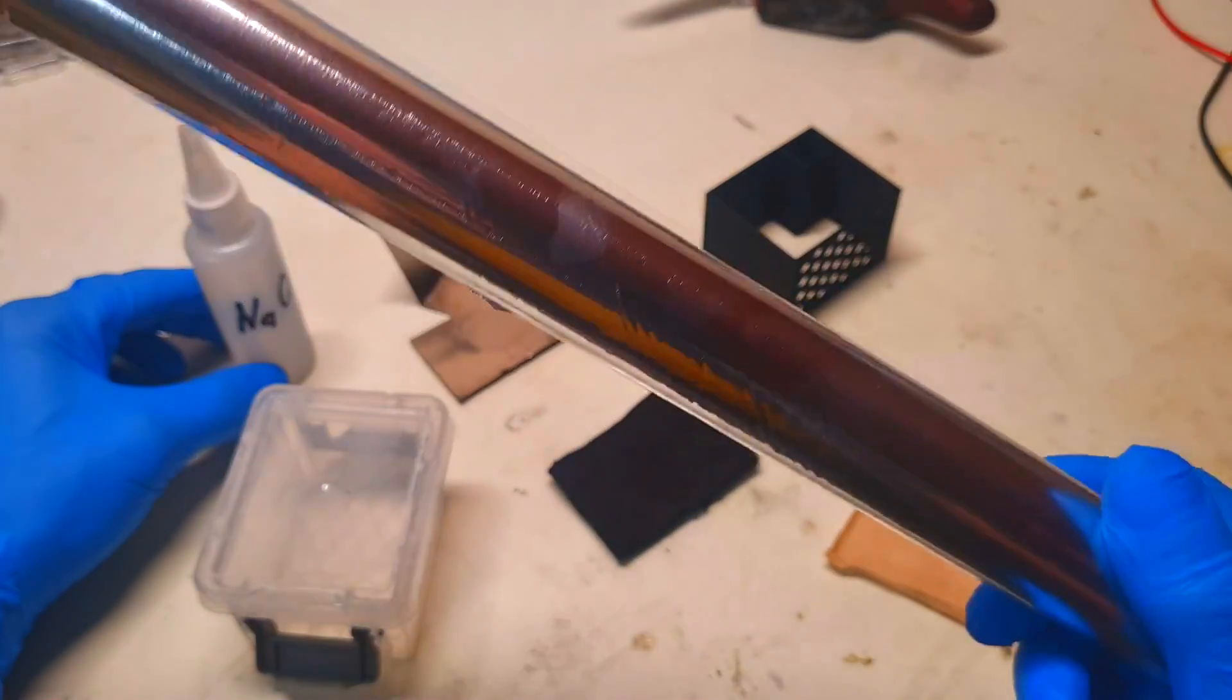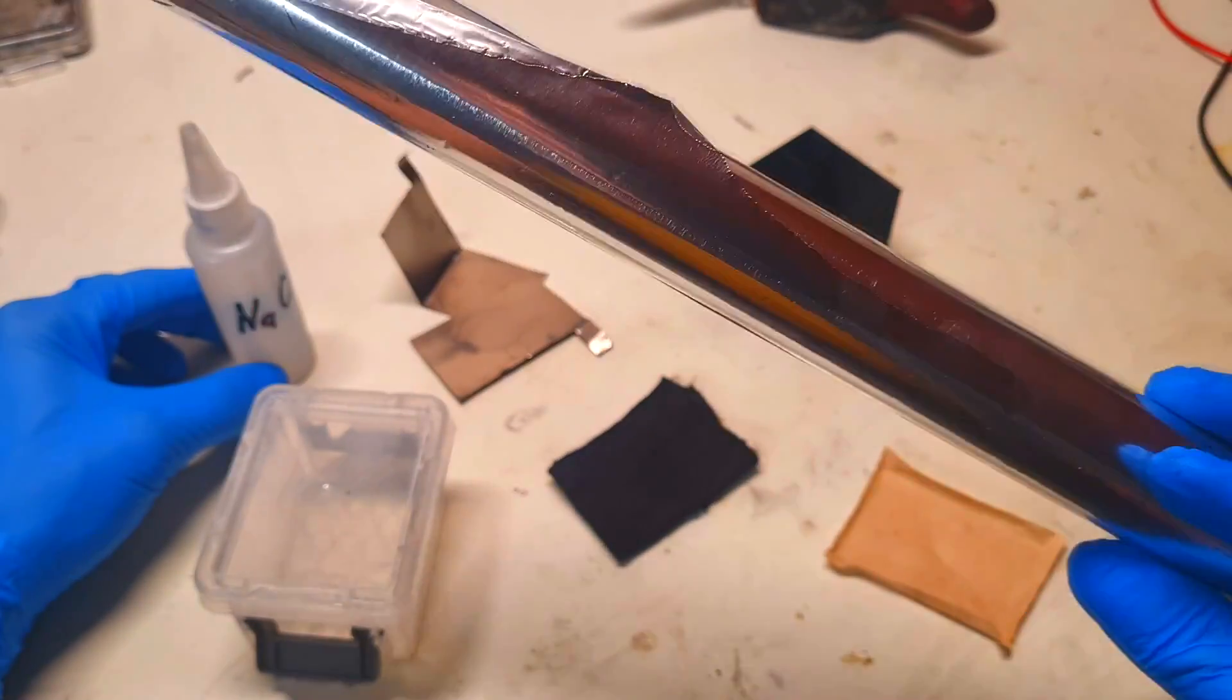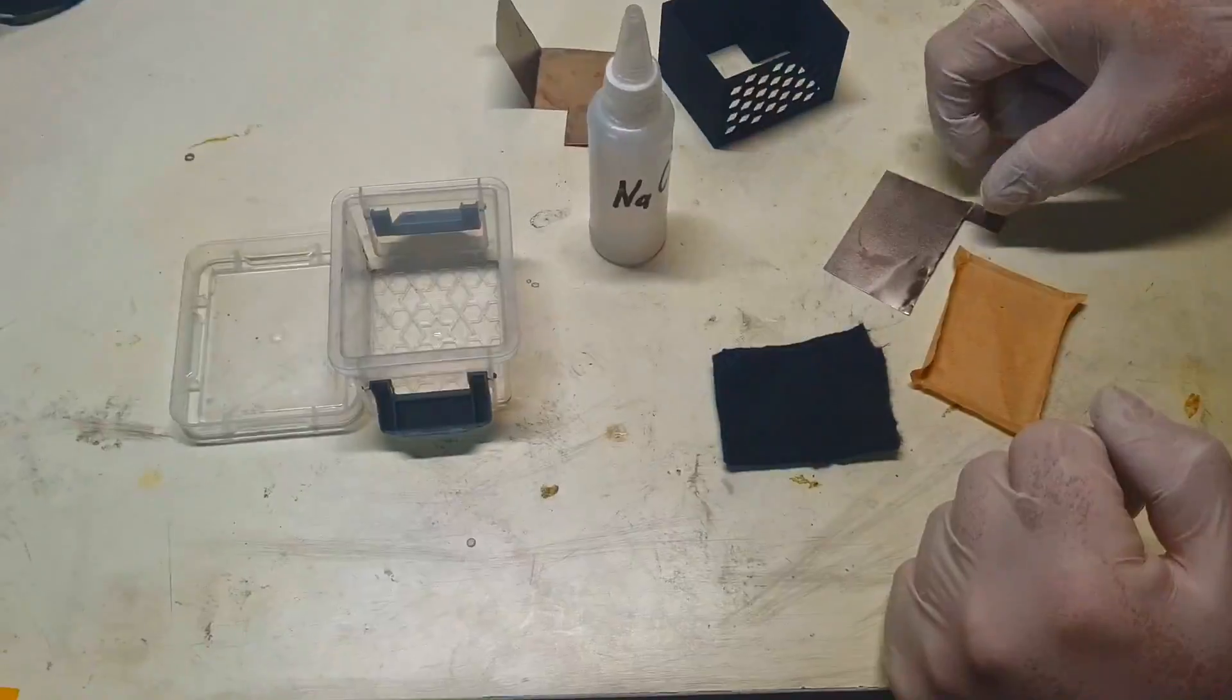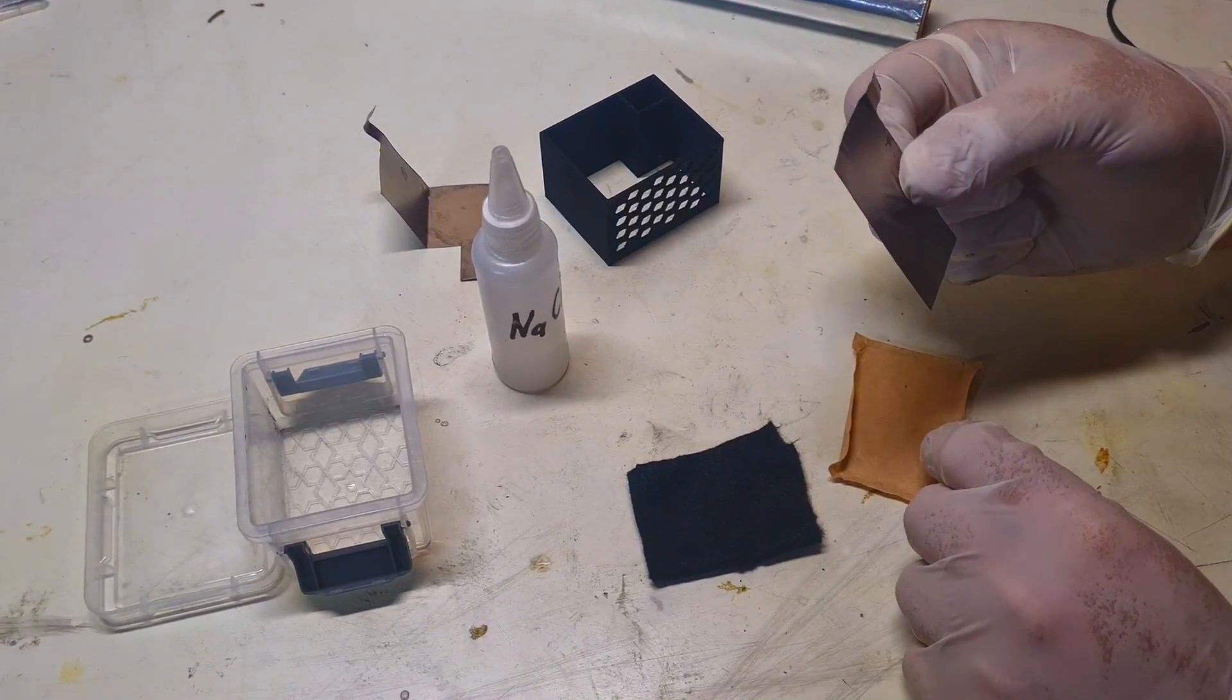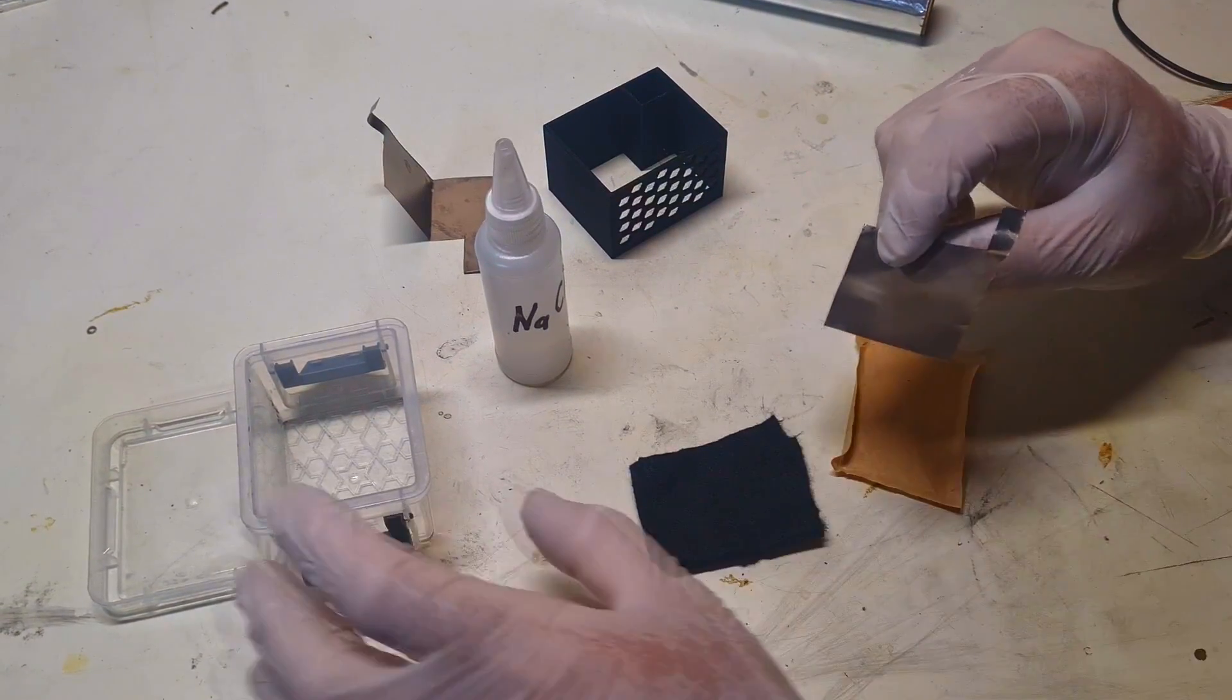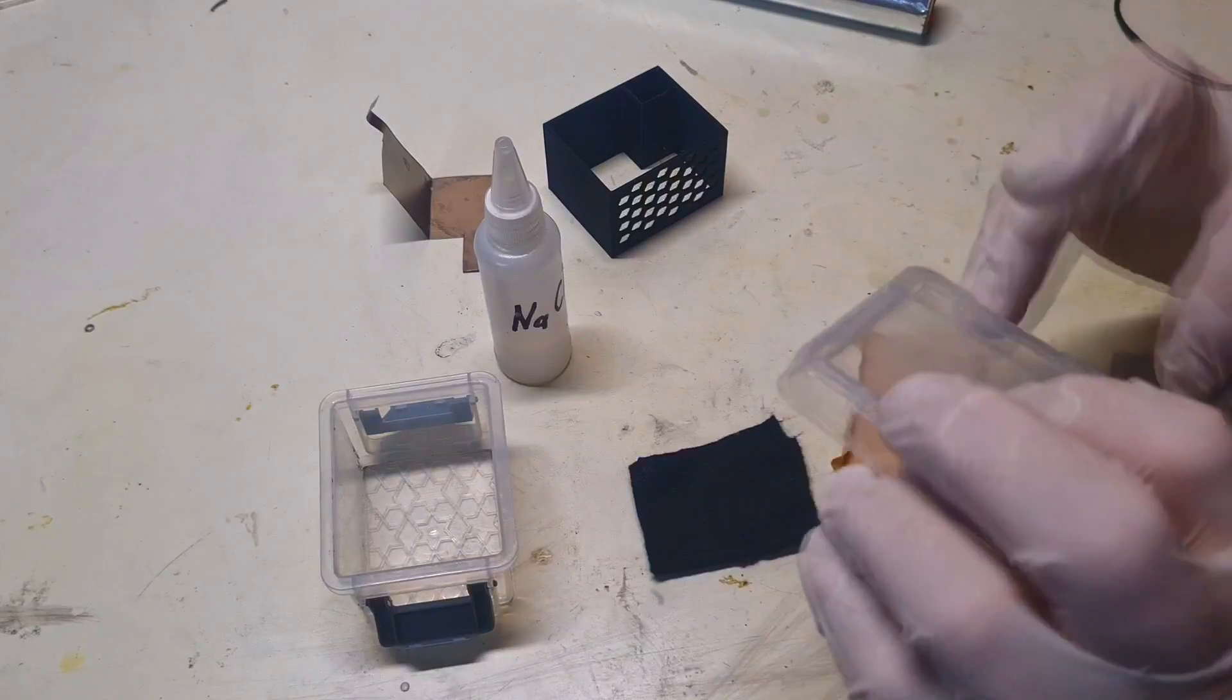And for the last component, the aluminum, which is actually the fuel of this cell. Now Matias will put this cell together. First, we'll use the positive current collector.